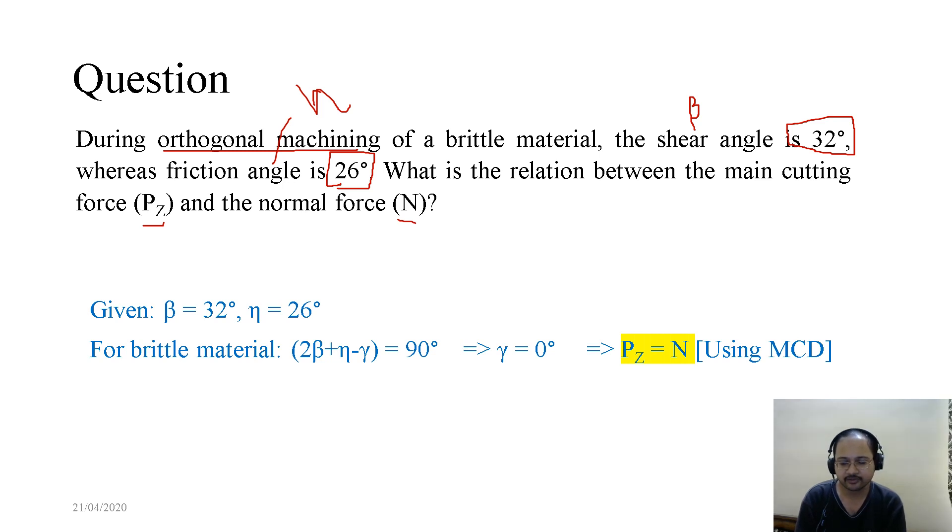For a brittle material, we know 2β + η - γ equals 90 degrees. Now, in this case, if we substitute the values of β equals 32 degrees and η equals 26 degrees into 2β + η - γ equals 90, we get 2 times 32 plus 26 minus γ equals 90, which gives γ equals 0 degrees. If γ equals 0 degrees, Pz has to be parallel and its magnitude would be equal to the normal force. That means, using the Merchant Circle Diagram, Pz equals N.